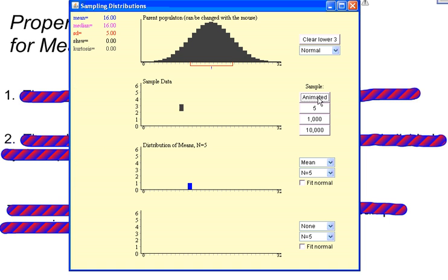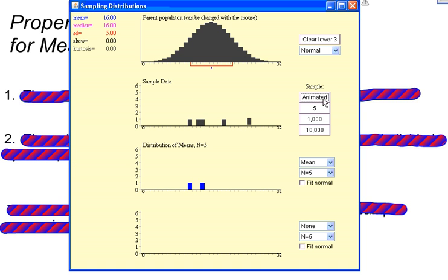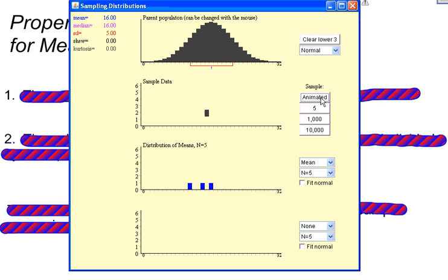I'm going to do that again. I'm going to find another 5 data points or data values from the population. The mean of those 5 is found and it gets put into this distribution again. And that just continues — I take a sample size of 5, find the mean, put it into my new distribution. I take another sample size of 5, find the mean of that, and put that into my distribution.